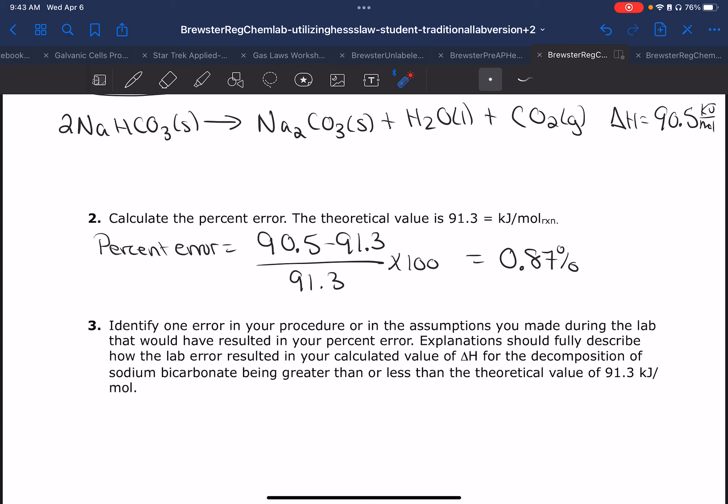So you need to identify one error in your procedure or the assumptions made during lab to assess for your error. If you have a minor error, you don't have to have as much of an error as somebody who has a substantial error. So think about it: if you're producing a large percent error, what did you not do so well? How could you improve that to knock that percent error down? Great job, and this is your help for your Hess's law. Thank you.